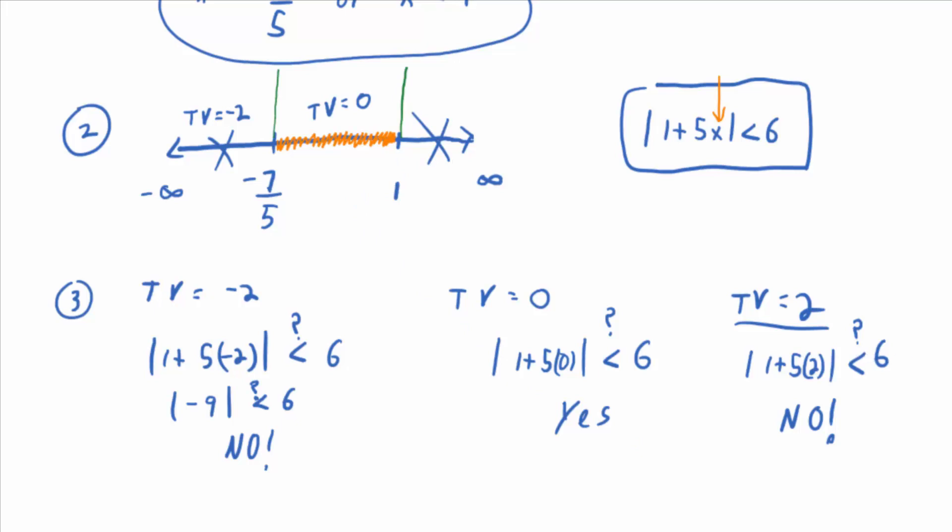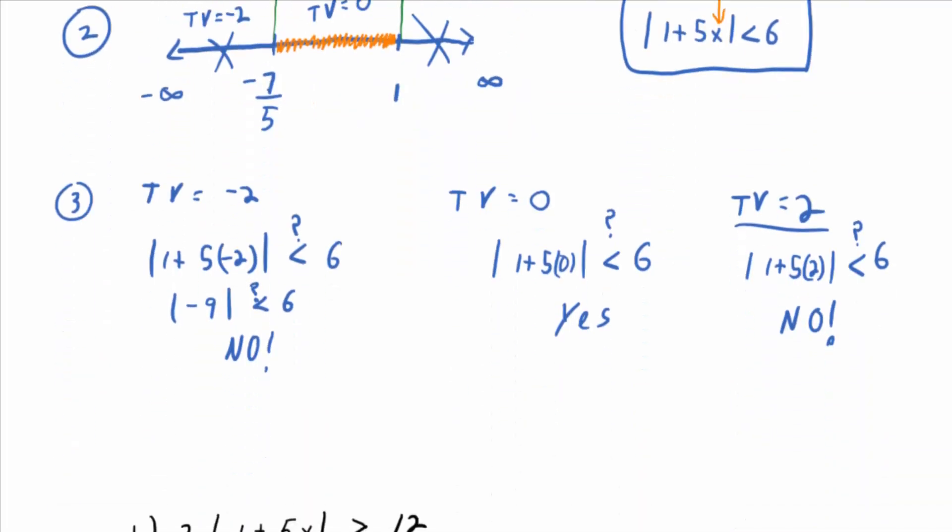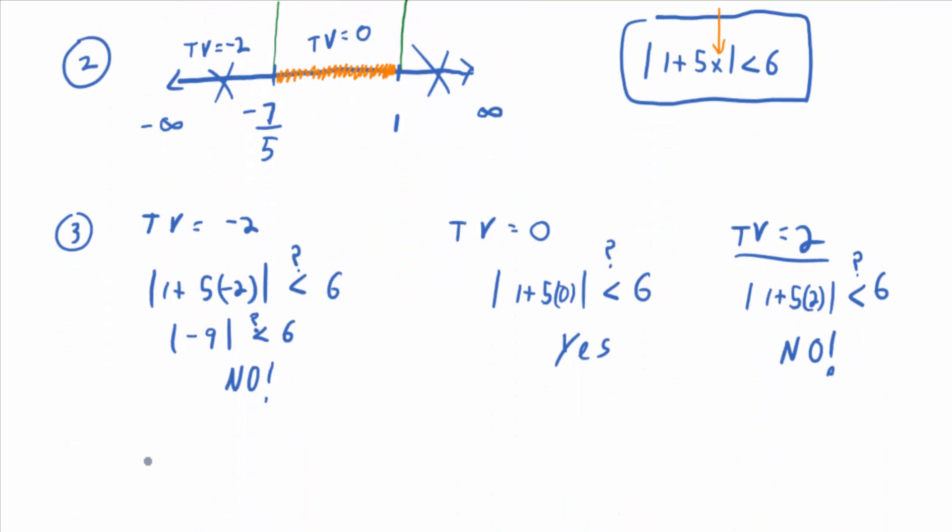So don't shade there. Were the endpoints included? No, it was a strict inequality. Endpoints not included. So what's your solution? Based on that graph, what's your solution interval going to be? Negative 7 fifths comma 1. So any x value in between negative 7 fifths and 1, not including the endpoints, works.